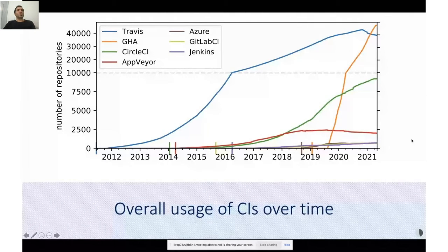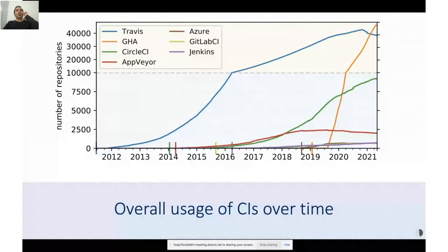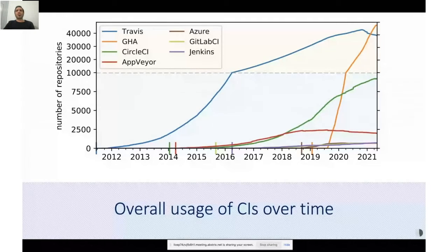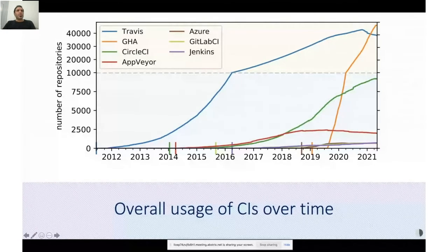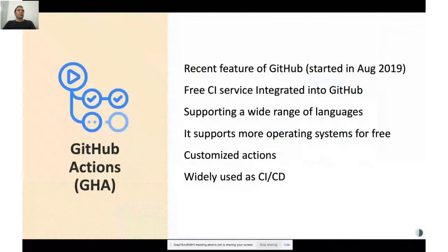The figure has two scales — in the upper and lower parts. We observed that for a long time Travis was the dominant CI for about nine years, but with the introduction of GitHub Actions, in less than 18 months it has taken over the dominance. What is GitHub Actions? It's a recent feature of GitHub, starting in August 2019.